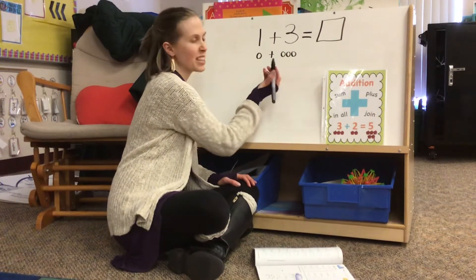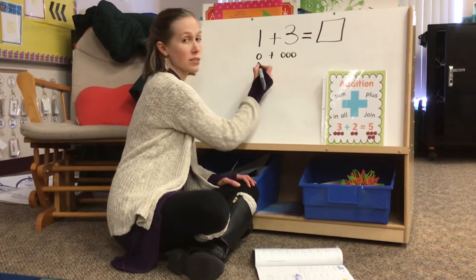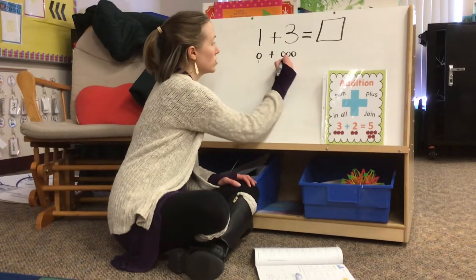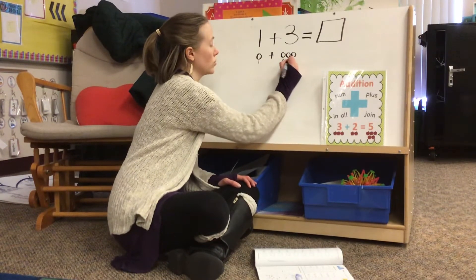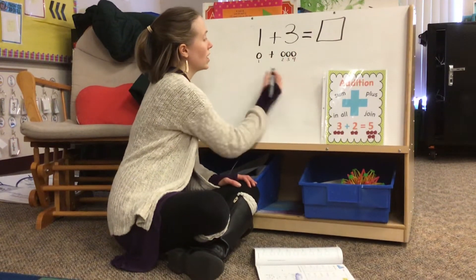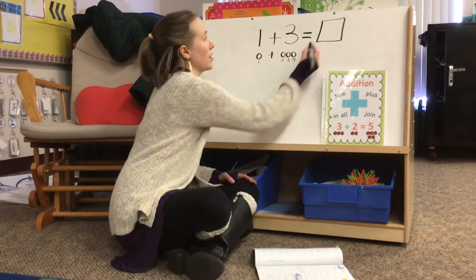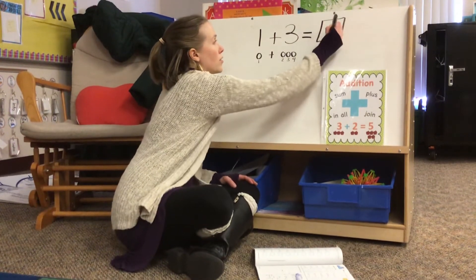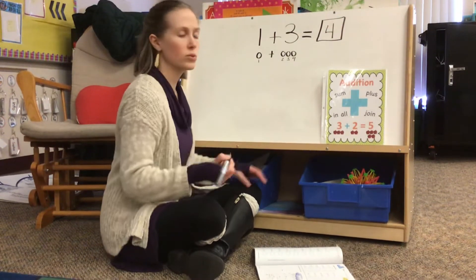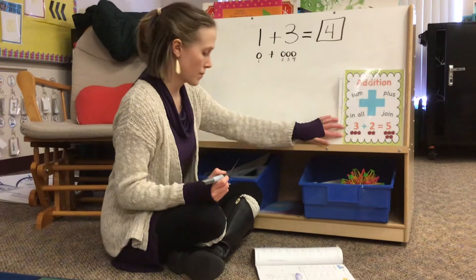Or if I was labeling my numbers I might write one, two, three, four. So I know that altogether there are four. Let's do another one.